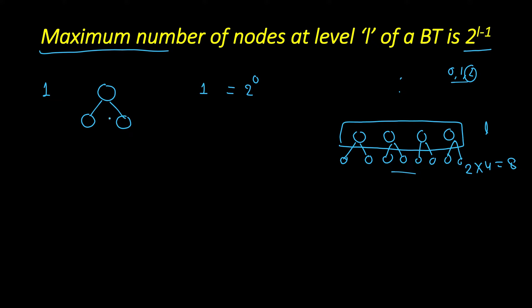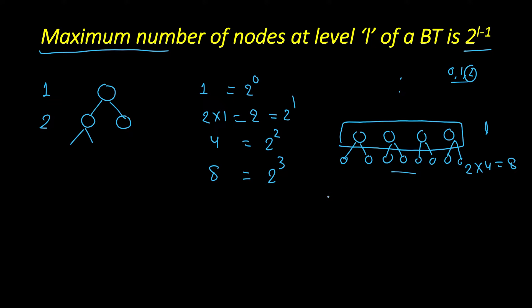Using this property: the first level has 1 node, the second level has 2 times 1, that is 2 nodes, the next level double again is 4, then 8. So this is 2 raised to the power 1, 2 raised to the power 2, 2 raised to the power 3. Every time we multiply by 2, the power increases by 1. At level 1 it's 0, at level 2 it's 1, at level 3 it's 2 — always 1 less than the level number. That's why the formula is 2 raised to the power L minus 1.